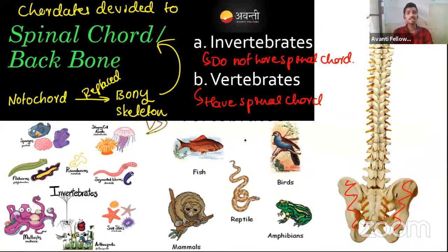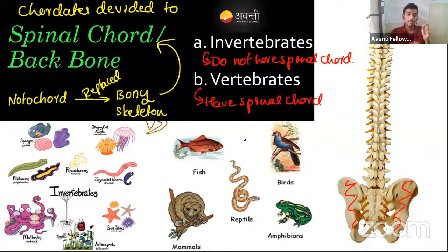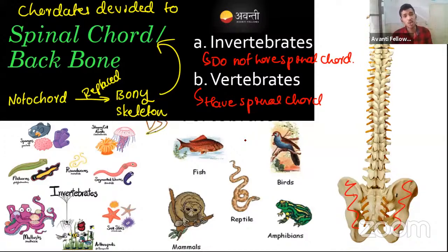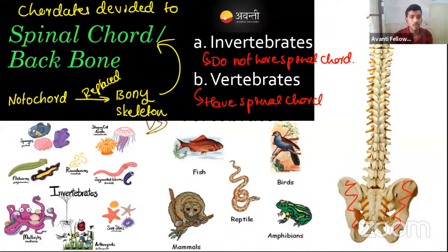What is the reason for replacing the notochord with a spinal cord? The notochord is a cartilage-like thing and can bear only a small amount of force — it is not as strong and rigid as bone. That's why the body chose a permanent bony spinal cord as a stronger, more permanent structure.